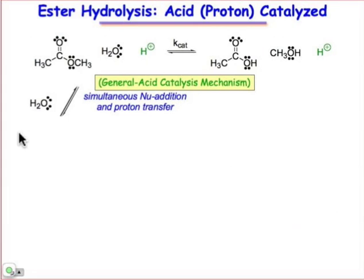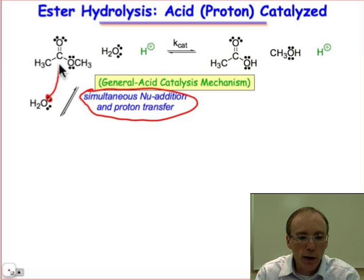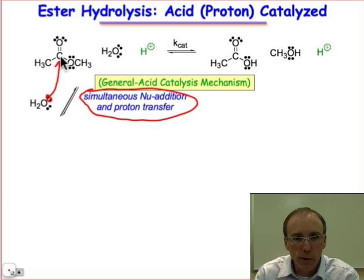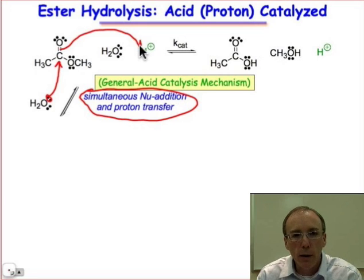The mechanism is going to show up with some differences in the way that the curved arrows are drawn. In the general acid-catalyzed mechanism, the key thing is this simultaneous nucleophile addition and proton transfer — we're not going to fully protonate that carbonyl. We're going to protonate that carbonyl while the nucleophile adds to it. Our nucleophile begins to approach that carbonyl group, and that carbon-oxygen double bond becomes a partial bond. As we add that nucleophile into the carbonyl, that pi bond is breaking, and we're going to use that pair of electrons to pick up the proton.